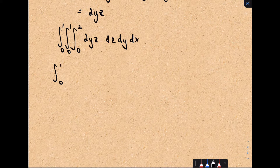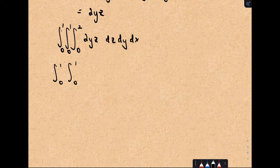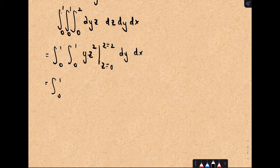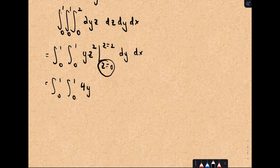We integrate from 0 to 1 in x, 0 to 1 in y, and 0 to 2 in z. If we integrate 2yz with respect to z, we get yz², evaluated from z = 0 to z = 2. Plugging in z = 2 gives 4y; the lower limit z = 0 gives 0, so the lower limit drops out.